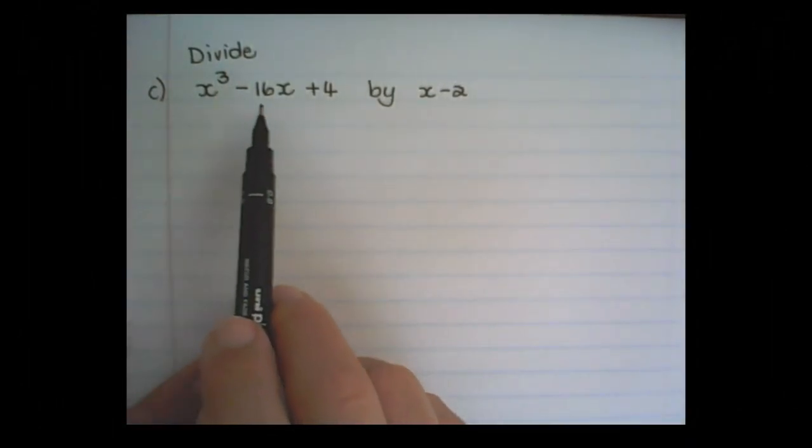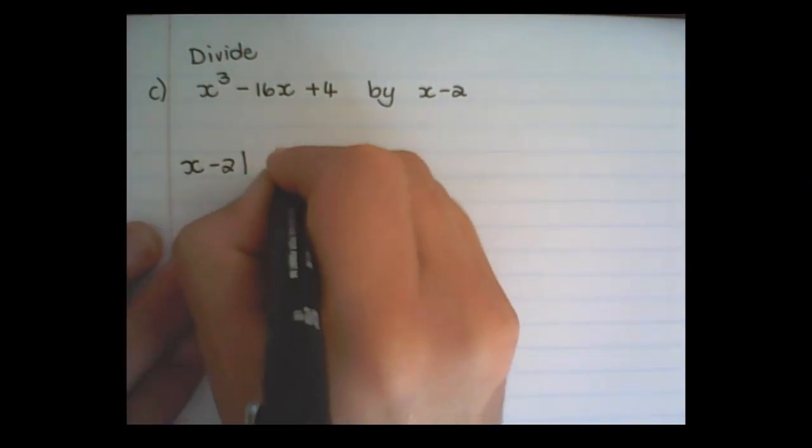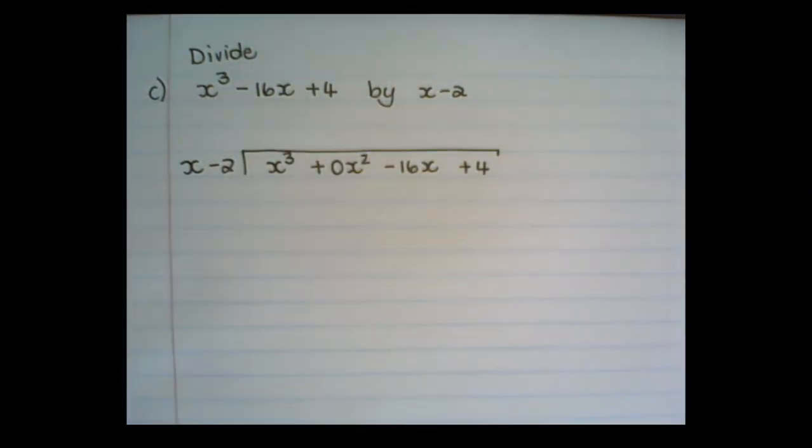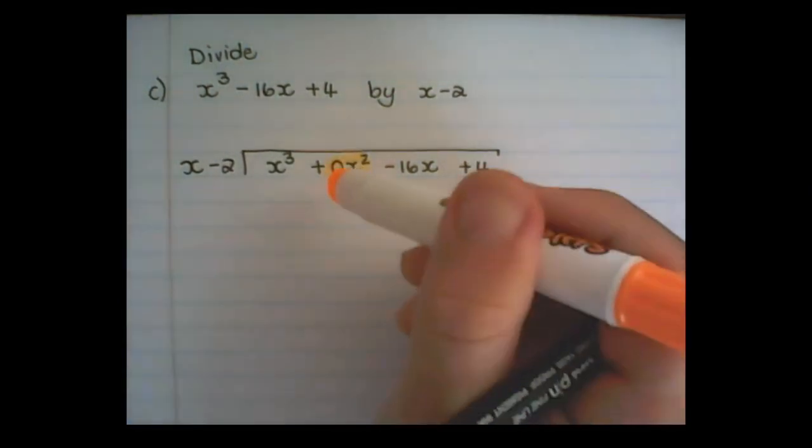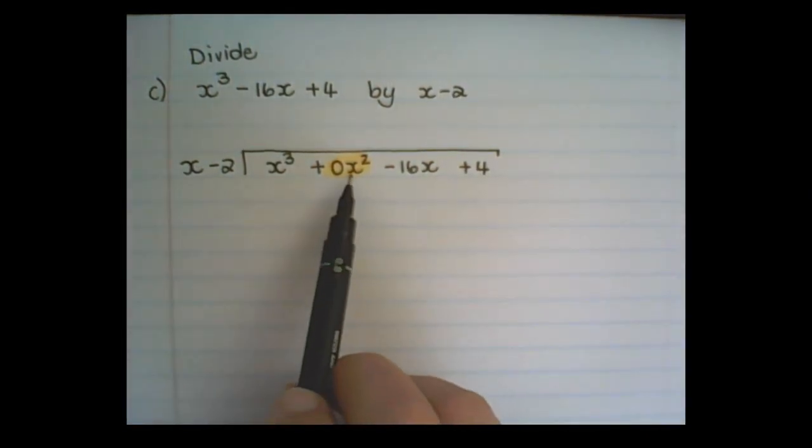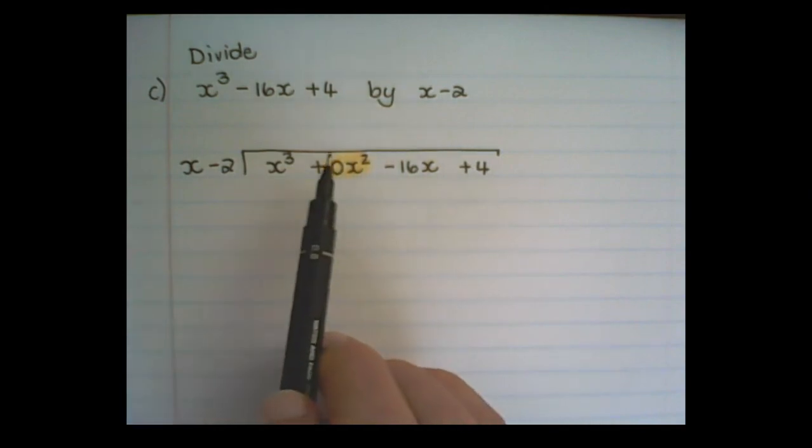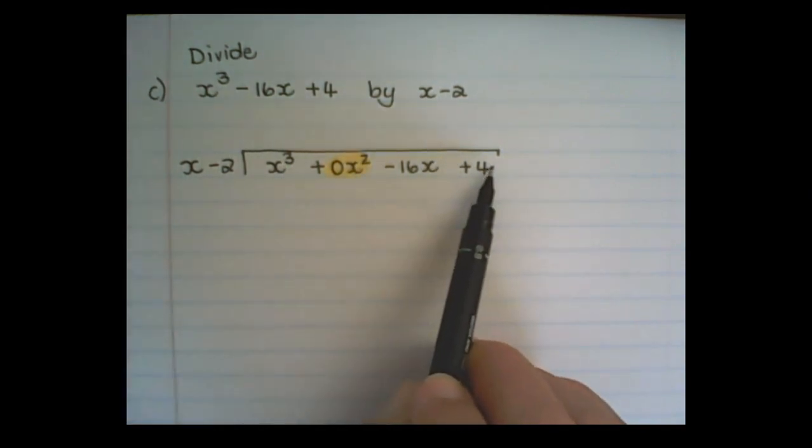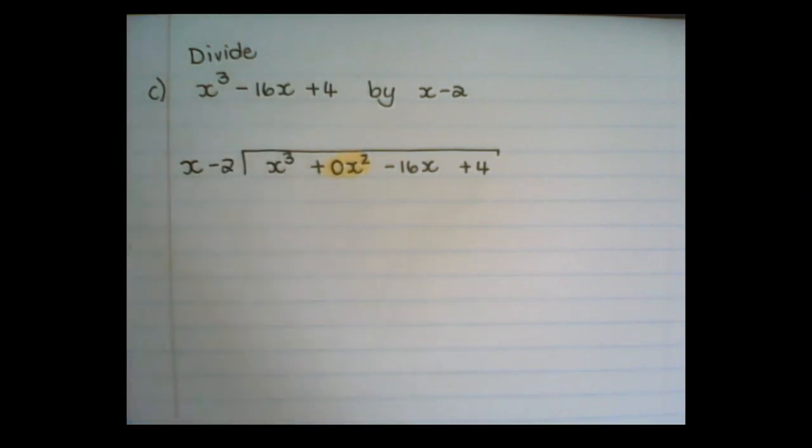Now let us divide x cubed minus 16x plus 4 by x minus 2. Notice that I added something. In the original expression there wasn't an x squared. But I want to add an x squared so that the powers of x is descending for all natural values of x. So it will be x cubed x squared x and then x to the power of 0. So important when something is missing, add that space. And you would see now why we need it.